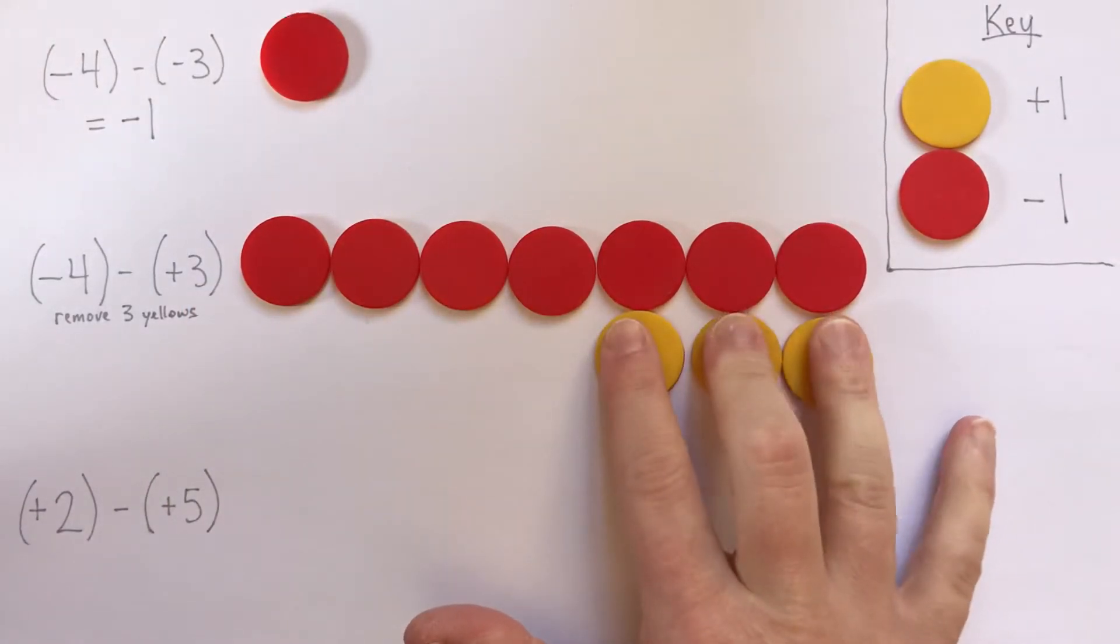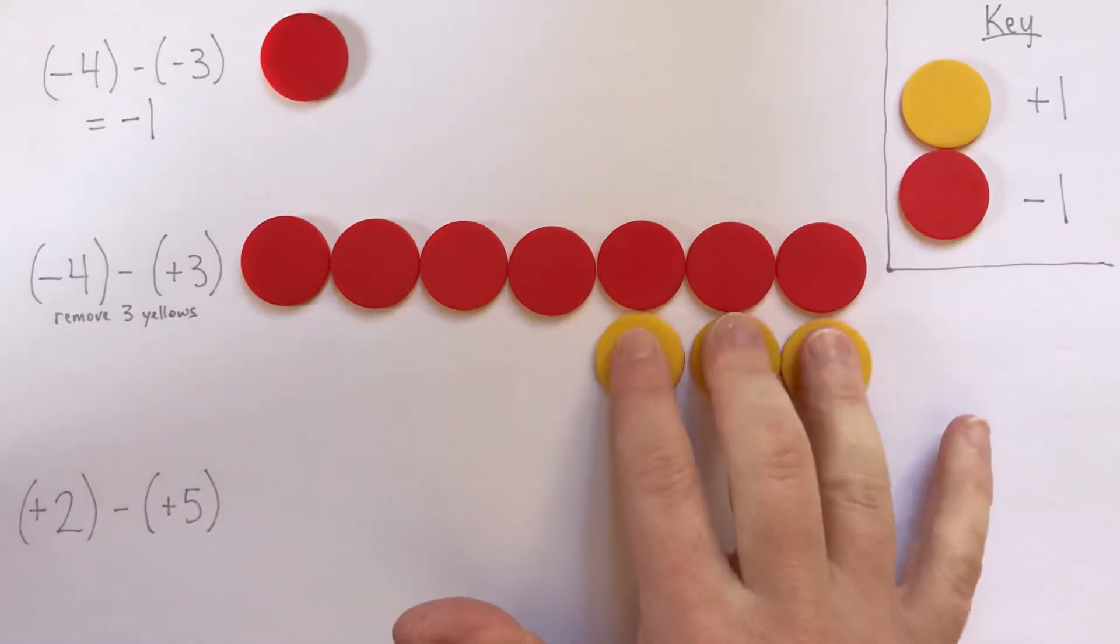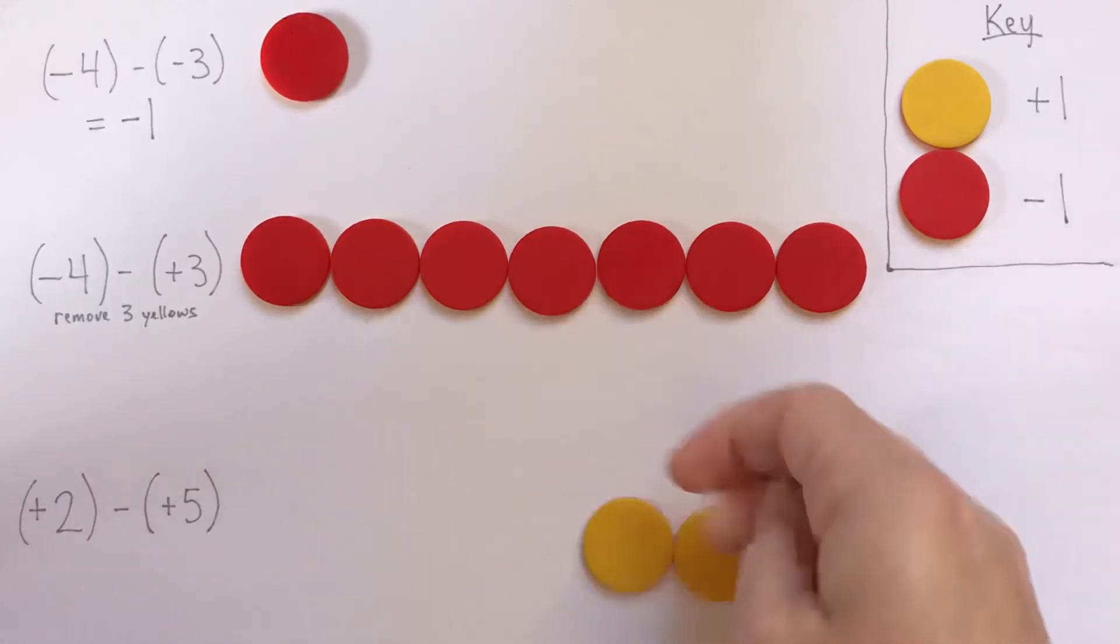My 3 yellows, I'm going to remove positive 3 here. And now I have done my subtraction. And this is our answer.